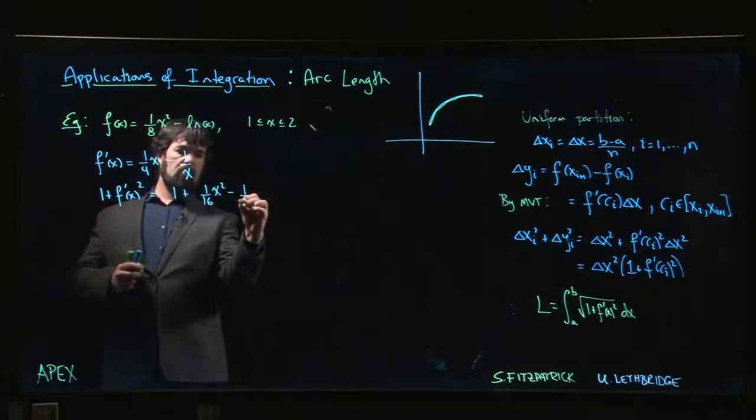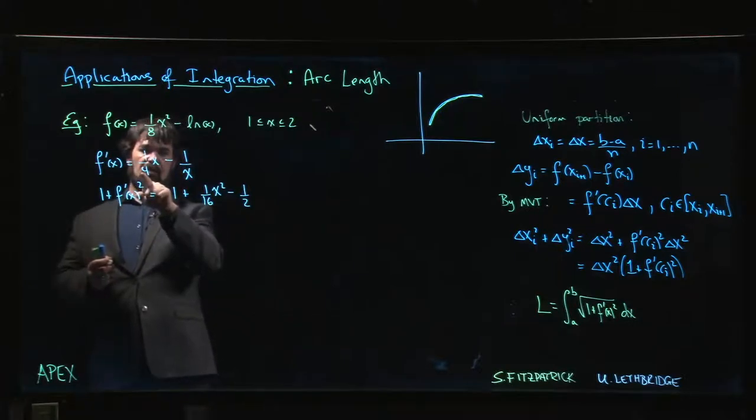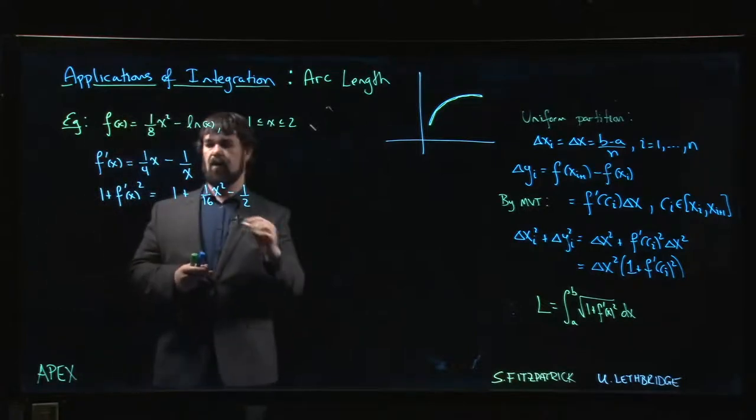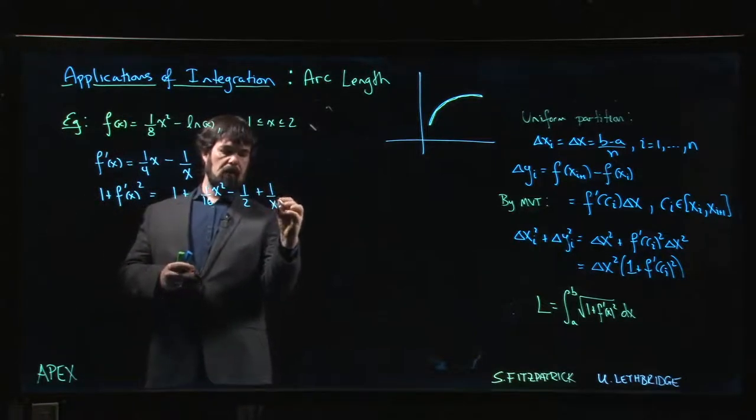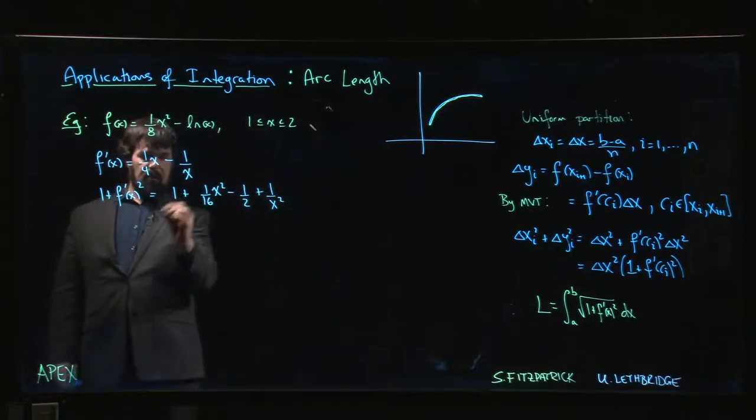The cross term is going to be minus 1/2, just 1/2, because (1/4)x times 1/x we just get a quarter. There's two of those in the cross term—twice a quarter gives a half. Then we have plus 1/x^2.